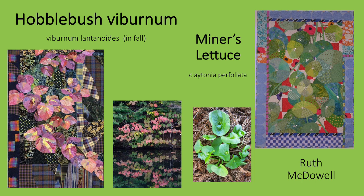I mentioned earlier that a Ruth McDowell's quilt had introduced me to Canada Lilies. I also first saw Hobblebush Viburnum and Miner's Lettuce in these quilts. Her Viburnum quilt makes me want to find the plant for my fall garden — she has expertly captured the variegated colors in this plant's fall leaves by piecing together different fabrics and using plaids. Miner's lettuce is called that because this semi-succulent plant native to California was eaten by miners during the gold rush to prevent scurvy. The stem actually passes through the leaf and a tiny white or pink flower grows on top of the leaves. McDowell has stitched small buttons to the center of the leaves to suggest the flowers.